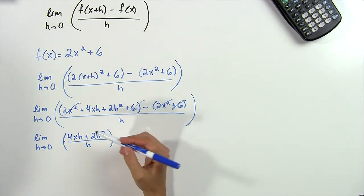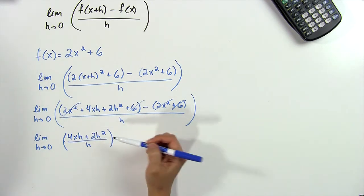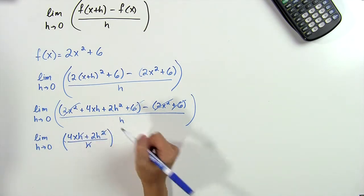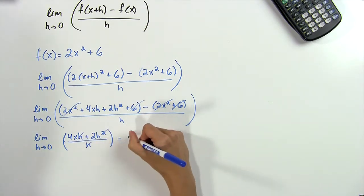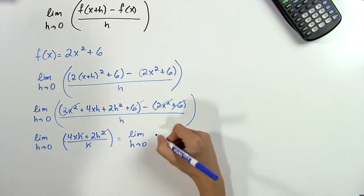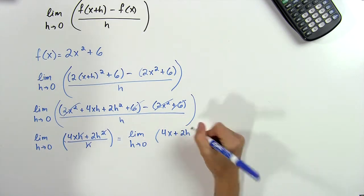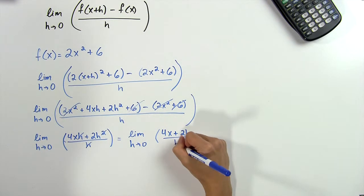Our last step is to factor one of these h's out of the numerator, and then it will cancel with the bottom. So we'll get rid of those and the squared there, and we have the limit as h tends to 0 of 4x plus 2h divided by 1.